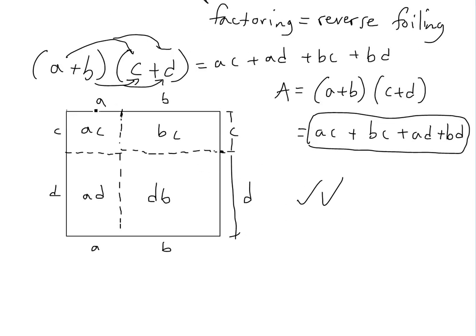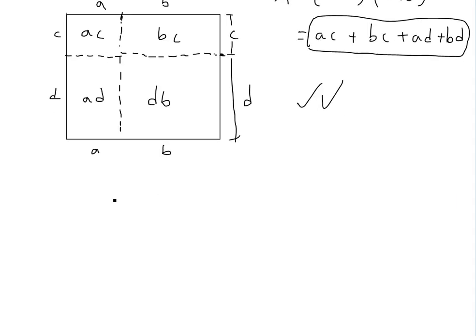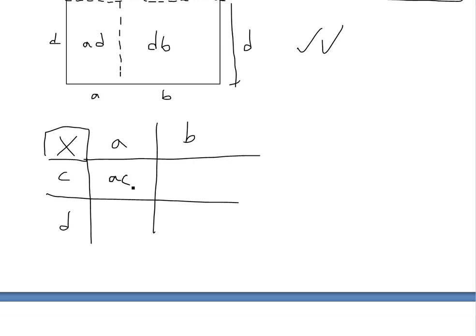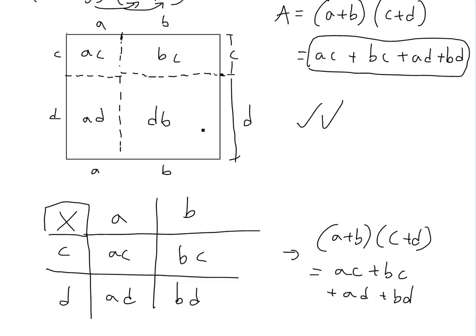From this proof, there's actually a really quick method using a table format that looks just like the proof. You put an X in the corner for a multiplication table, then put your terms A and B along the top and C and D along the side. Multiply them out and add them all up — you get AC plus BC plus AD plus BD, the answer to A plus B times C plus D.